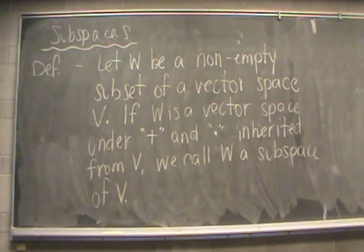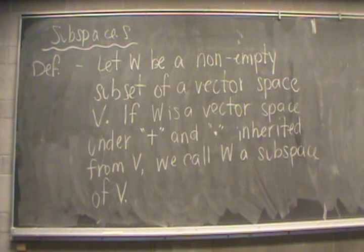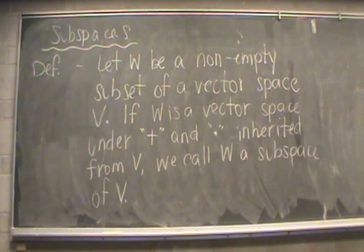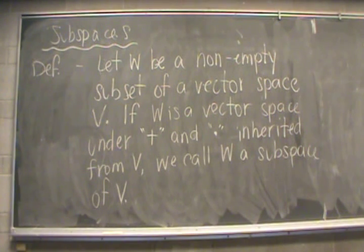Consider a non-empty subset of a vector space V — we're going to call that subset W. If W ends up being a vector space under the addition and the scalar multiplication that we've defined for V, then W is called a subspace of V.